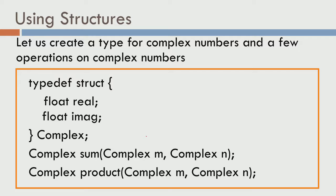What we will do is define a structure called complex. The complex structure has two fields or two members, namely real and imaginary. We are going to keep this as our complex number — it is going to have a real member and an imaginary member. From now on, complex is a data type that I can use, pass to functions, and pass back from functions.